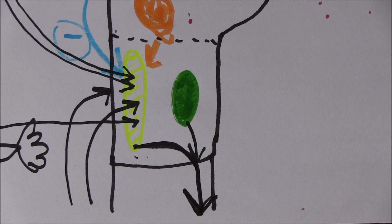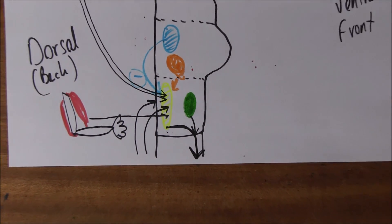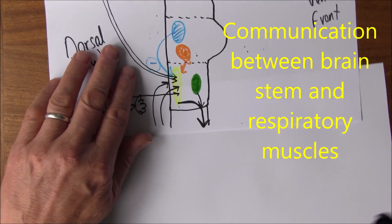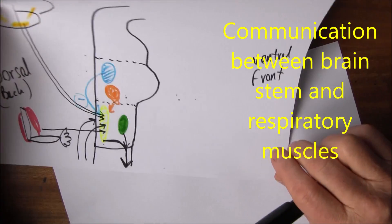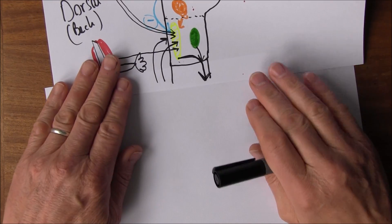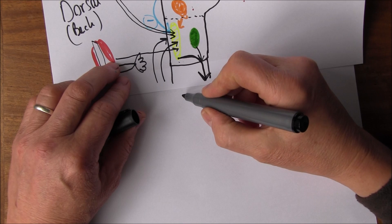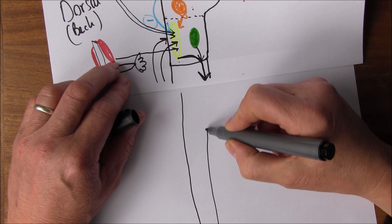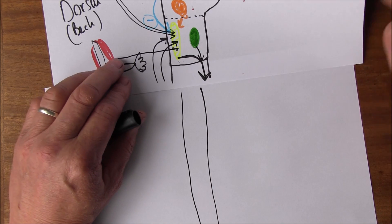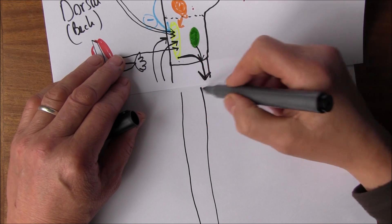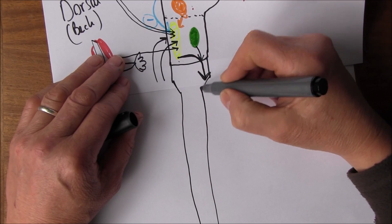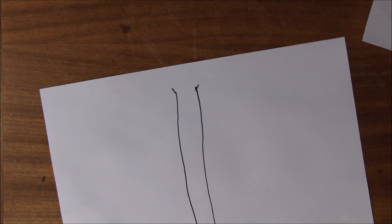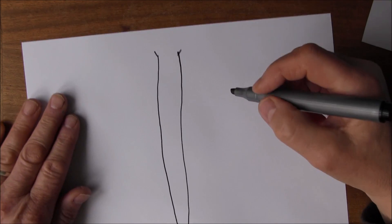Now let's look at how these nerve impulses work. They travel down the spinal cord, which is continuous with the medulla oblongata. In the spinal cord, we have eight cervical nerves (C1 through C8) and twelve thoracic nerves (T1 through T12), the same on both sides.